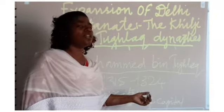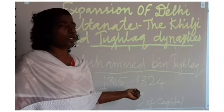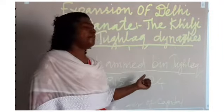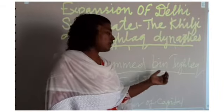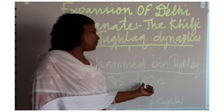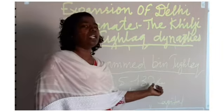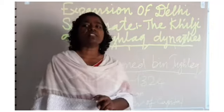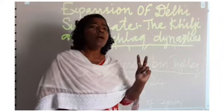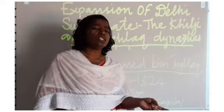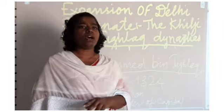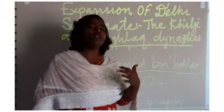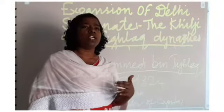After the Muhammad bin Tughluq period, his power came to an end. After that, there were two important dynasties that ruled India: the Sayyid dynasty and the Lodi dynasty. The Timur invasion occurred in India, and Khizr Khan was appointed as viceroy.